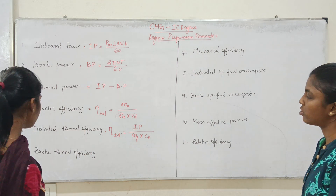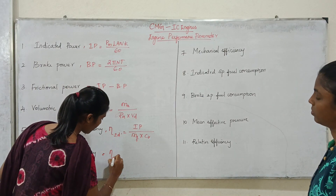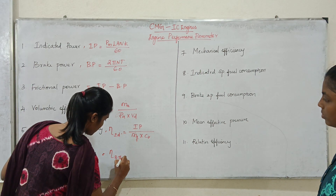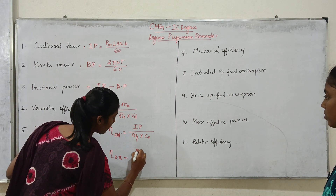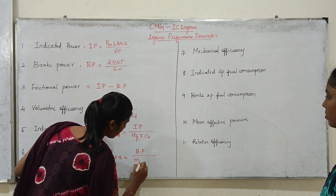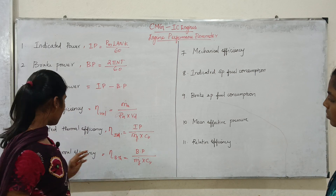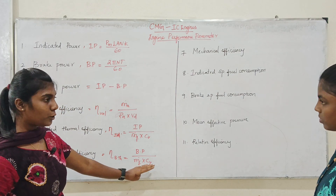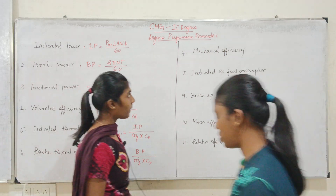Brake thermal efficiency, denoted as η_bth, is equal to brake power divided by mass flow rate into calorific value, that is BP divided by m_dot into CV.